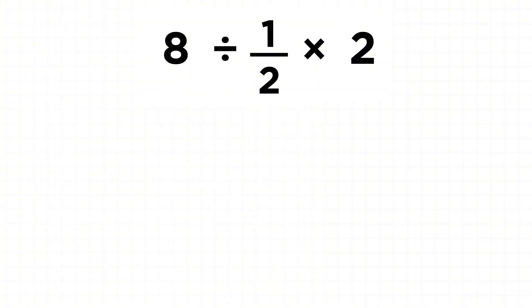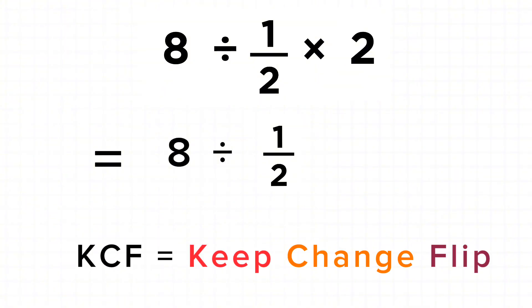First we'll solve 8 divided by 1/2 using a method called KCF: keep, change, and flip. We keep the 8 as it is, change the division sign to multiplication,